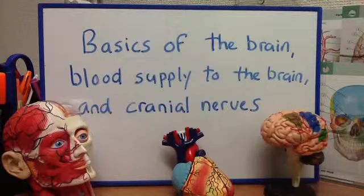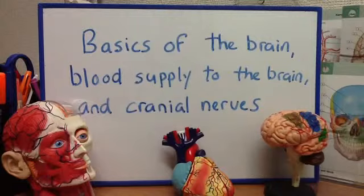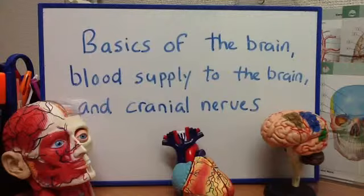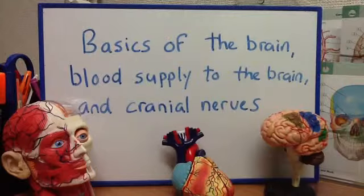Let's begin with the basics of the skull. First question: the skull is composed of how many bones in total? Twenty-six. What is the name of the cheekbone? The zygomatic bone. What is the bone in the skull that separates the nasal cavity from the brain? That is the ethmoid bone.